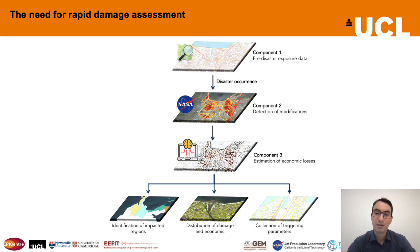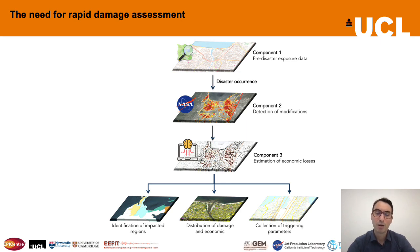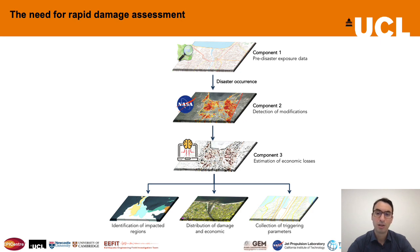Then, for the affected areas, it is necessary to use the remote sensing datasets produced by the NASA JPL team. These datasets are raster files, which basically include a set of pixels. The value of the pixels varies between zero and one, zero being no change whatsoever and one being a complete change in the built environment. Finally, we have calibrated some machine learning algorithms, in particular random forests, and they indicate a damage state for each building in the affected area.